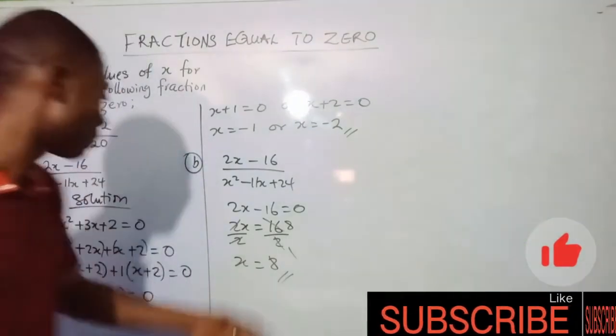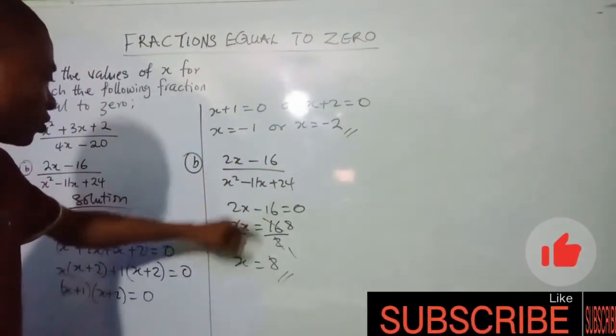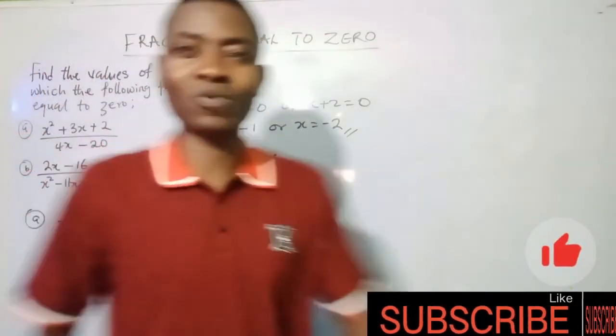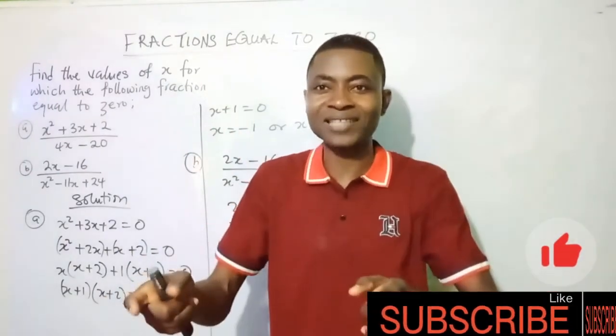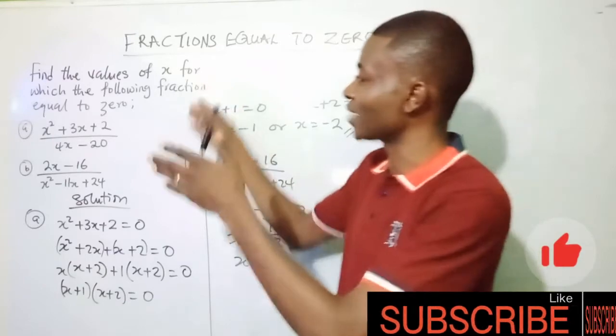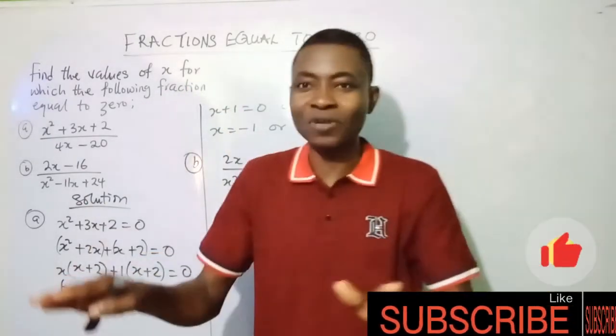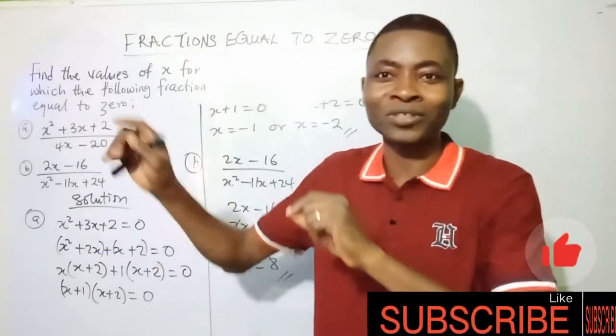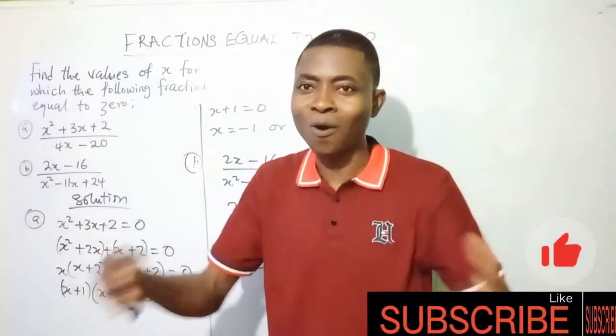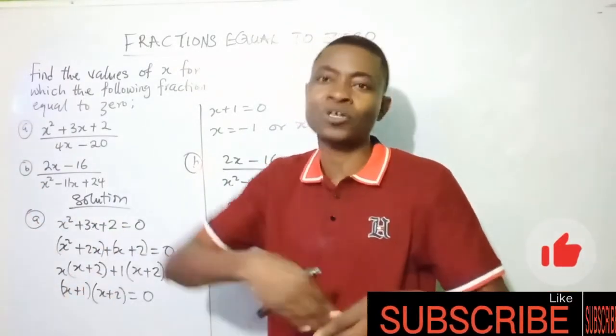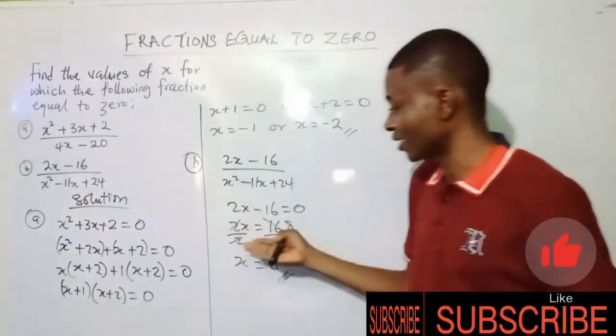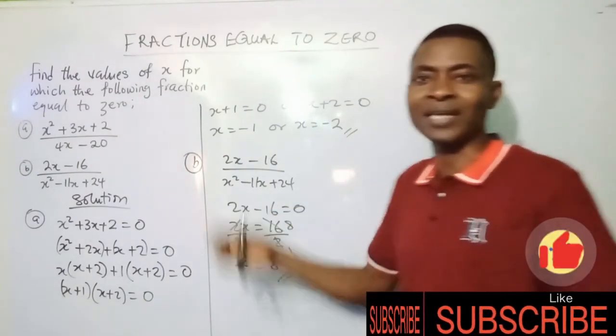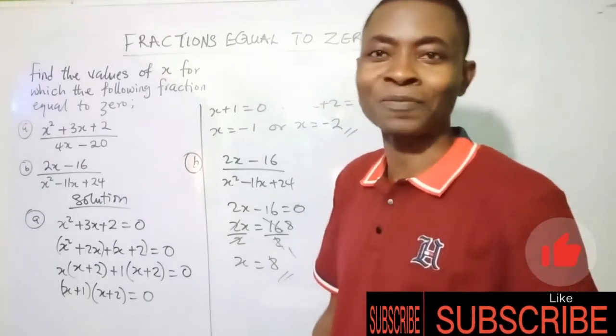If I put 8 into this equation, my answer will equal 0. So anytime you see a question like this in an exam or test, for what value of x will the following fraction equal zero, don't bother about the denominator. Concentrate on the numerator. Equate everything to zero and look at it. Am I going to factorize or is it just a simple equation? If it's a simple equation, just collect like terms and get your answer. Not difficult at all, very simple.